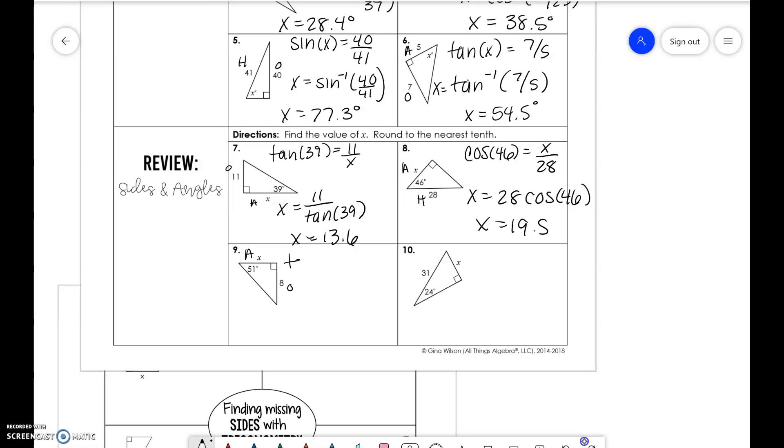Opposite and adjacent. So tangent of 51 is equal to 8 over x. And sine of 24 is equal to x over 31.